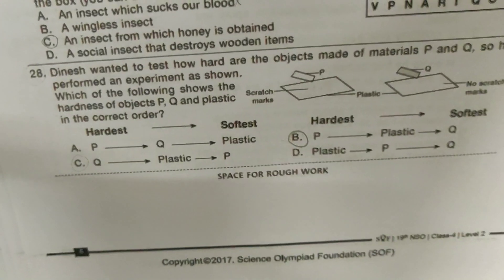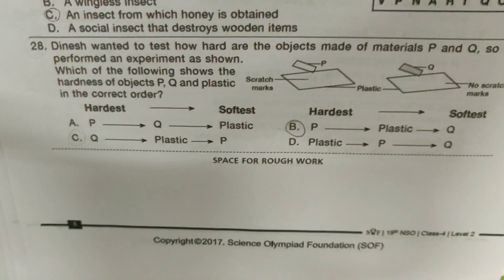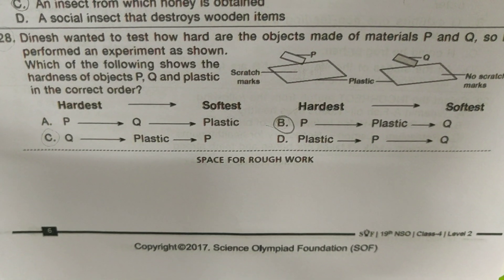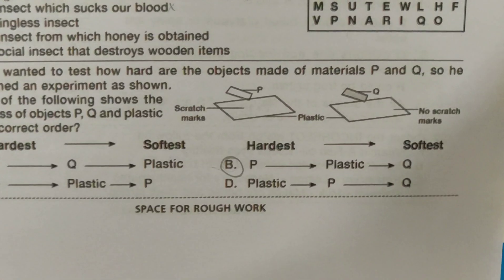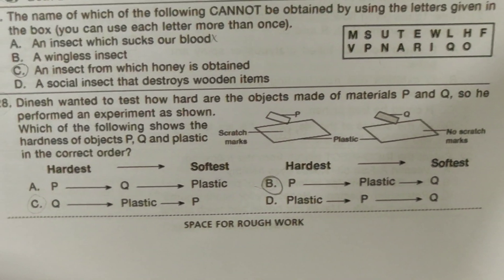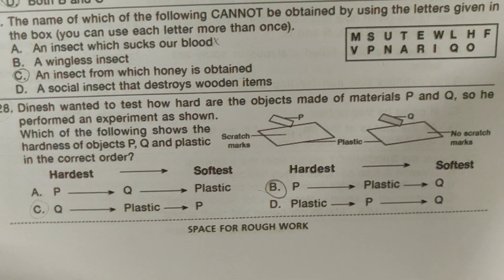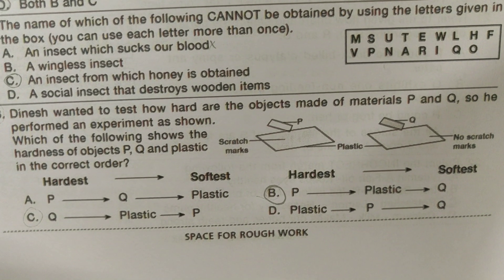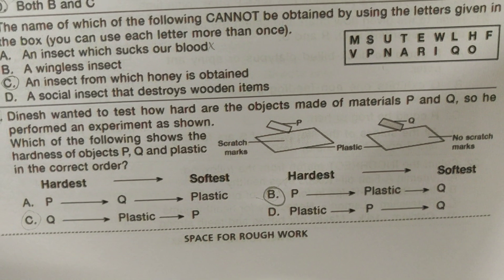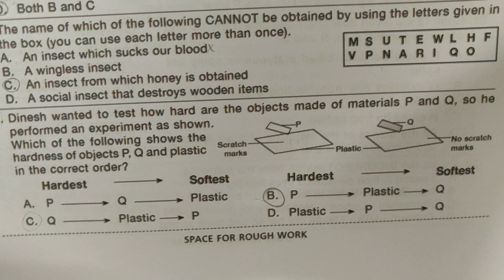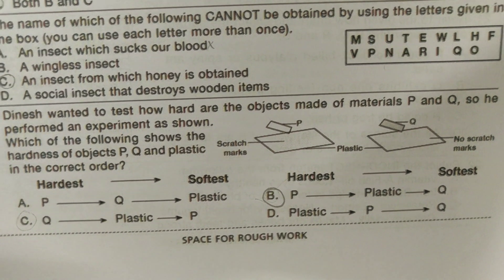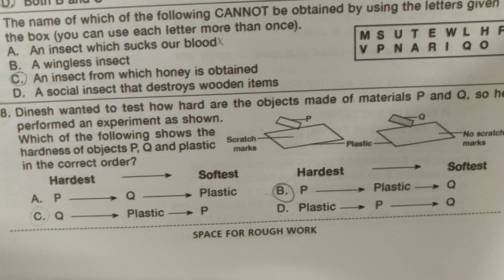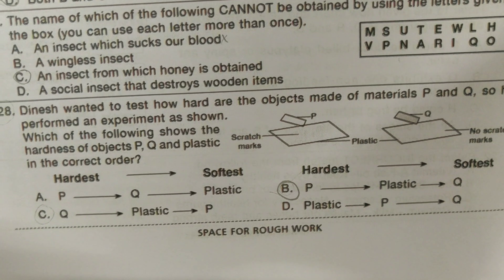Dinesh wanted to test how hard the objects made of materials P and K are, so he performed an experiment. Which of the following shows the hardness of objects P, Q, and Plastic in the correct order? It's B — P to Plastic to Q. It's very simple.